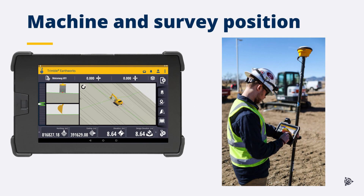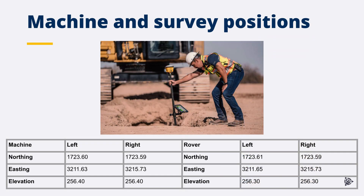To determine if the machine position is accurate, an independent reference must be provided with the Z-SNAP to compare the machine calculated position with the actual position on site. The machine positions from the Z-SNAP — northing, easting, and elevation — and the survey positions can be compared to check the machine position accuracy and assist in diagnosing the problem.